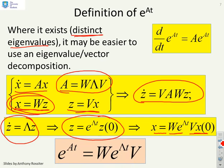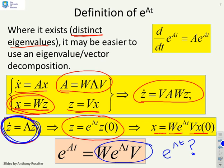Now what's the nice thing here? Is we have an expression. e to the At is given by W e to the lambda t V. And the key question is, can I write e to the lambda t by inspection? And remember, e to the lambda t is what I've used to solve this expression here, which is a set of decoupled or diagonal equations.